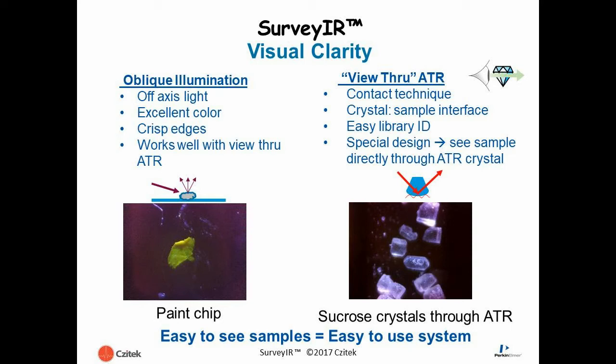Another unique feature of Surveyor that works very nicely with Diamond ATR is the oblique illumination. Oblique illumination provides excellent contrast for scattering samples such as this paint chip that we have viewed on the left, or sucrose crystals as viewed on the right.